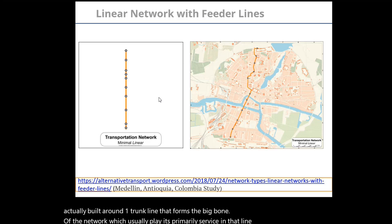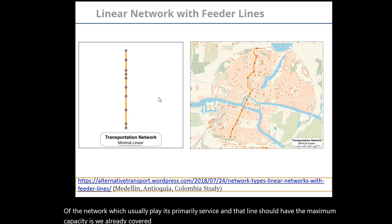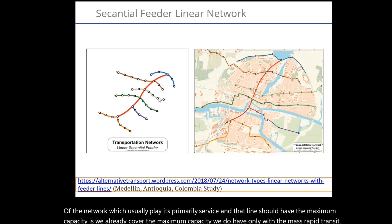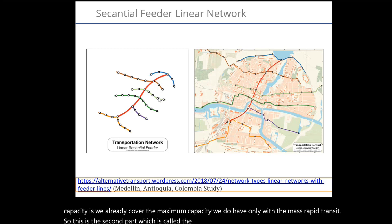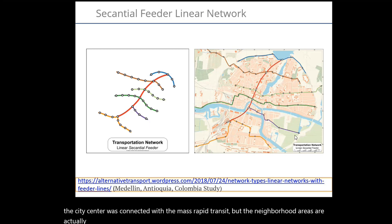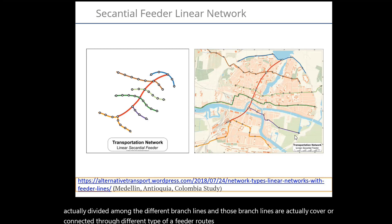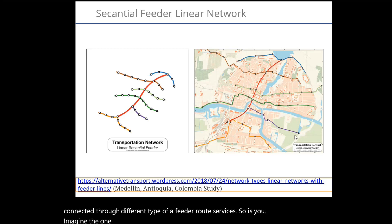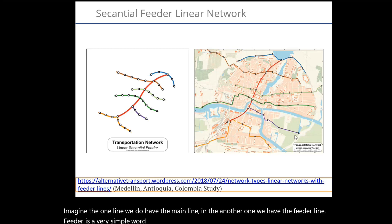That line should have the maximum capacity, which we already covered — we have maximum capacity only with the mass rapid transit. This is the second part, called the Scantial Feeder Linear Network. The city center is connected with the mass rapid transit, but the neighborhood areas are actually divided among different branch lines, which are connected through different types of feeder route services. The main line is one, and the feeder line feeds it — feeder is a very simple word meaning to feed. So we try to feed the mass rapid transit with passengers.